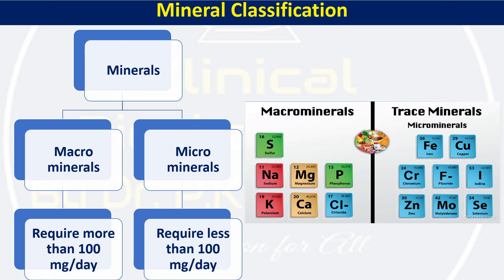There are seven macrominerals in total, and a number of microminerals — also called trace minerals because our requirement is very less. The seven macrominerals are sulfur, sodium, potassium, magnesium, calcium, chloride, and phosphorus.